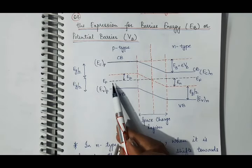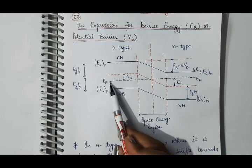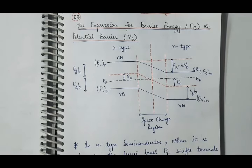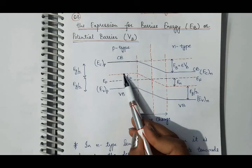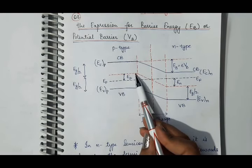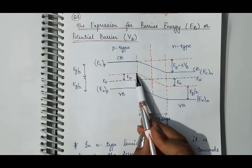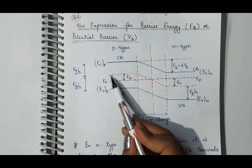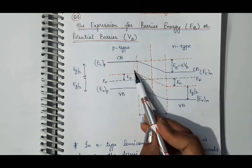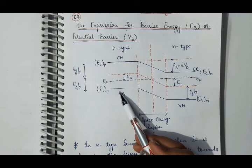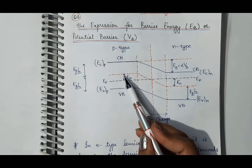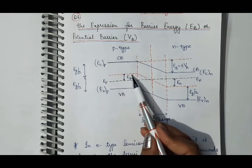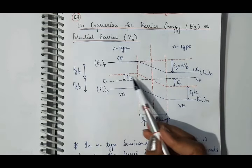This is the Fermi level in the P-N junction, and this red line is the Fermi level in the case of the intrinsic semiconductor. When the intrinsic semiconductor changes to P-type, the Fermi level moves from its central position closer to the top of the valence band. Suppose it has shifted by energy Ep — that is the new position of the Fermi level in the P-type semiconductor. The original position was in the middle between the valence and conduction band, which is the intrinsic semiconductor case.